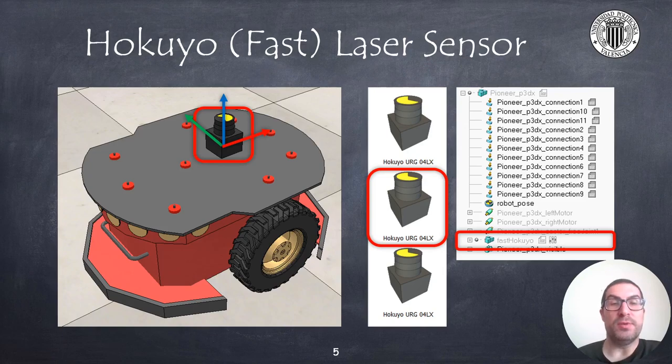In addition, we will also add a Hokuyo URG Z04LX laser sensor. You will find this sensor inside the sensors category of the CoppelaSim model browser. Note that there are three different models for the same sensor. I have used the second one.